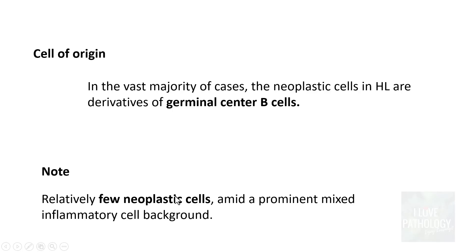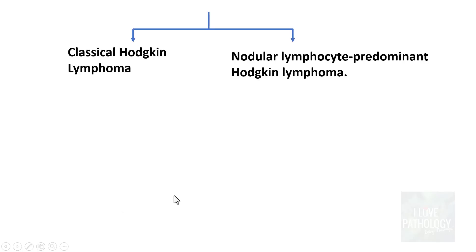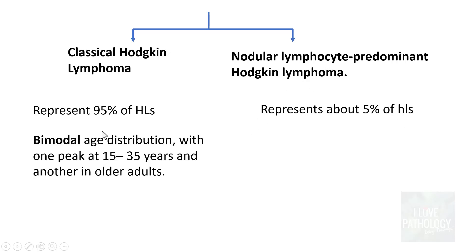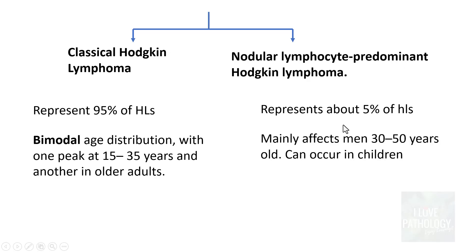Hodgkin Lymphoma is categorized into Classical Hodgkin Lymphoma and Nodular Lymphocyte Predominant Hodgkin Lymphoma. Classical Hodgkin Lymphoma is the most common, accounting for around 95% of Hodgkin Lymphomas, whereas Nodular Lymphocyte Predominant Hodgkin Lymphoma constitutes around 5%. Classical Hodgkin Lymphoma has a bimodal age distribution with one peak at 15 to 35 years and another in older adults, whereas Nodular Lymphocyte Predominant Hodgkin Lymphoma mainly affects people around 30 to 50 years and does not have bimodal age distribution.